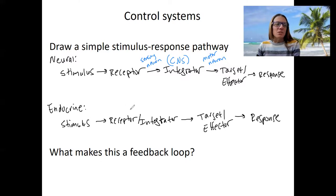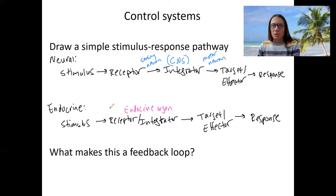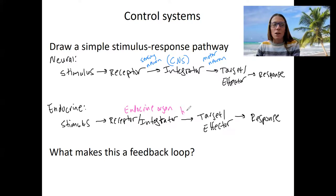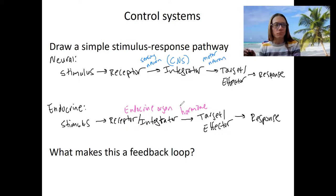For the endocrine pathway, this here would be the endocrine organ. The input signal can actually be direct — endocrine organs can directly detect variables that are out of whack, such as blood sugar. The output signal is a hormone, which is what endocrine organs produce. That hormone often targets more than one thing in the body to respond to that change.